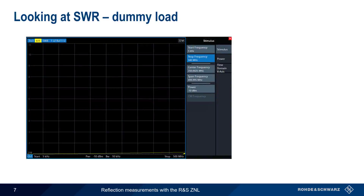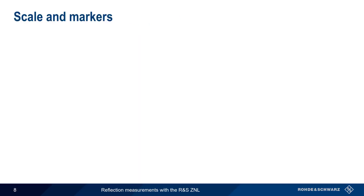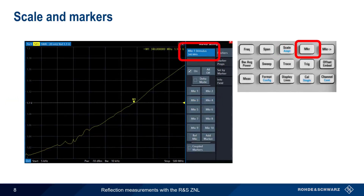To characterize our dummy load, we select measurement type S11 and format as SWR. We set a frequency range of 5 kHz to 500 MHz. By pressing the Scale Amplitude hard key and selecting Auto Scale Trace, we can zoom in on the trace. The vertical scale shows SWR from 1.0 to 1.2, and setting the reference value to 1.1 gives us a convenient line at the dummy load's specified SWR limit. Using the Marker hard key, we place a marker where the trace crosses this line, and we see that SWR is in fact only below 1.1 up to 340 MHz, not 500 MHz as stated in the dummy load specification.